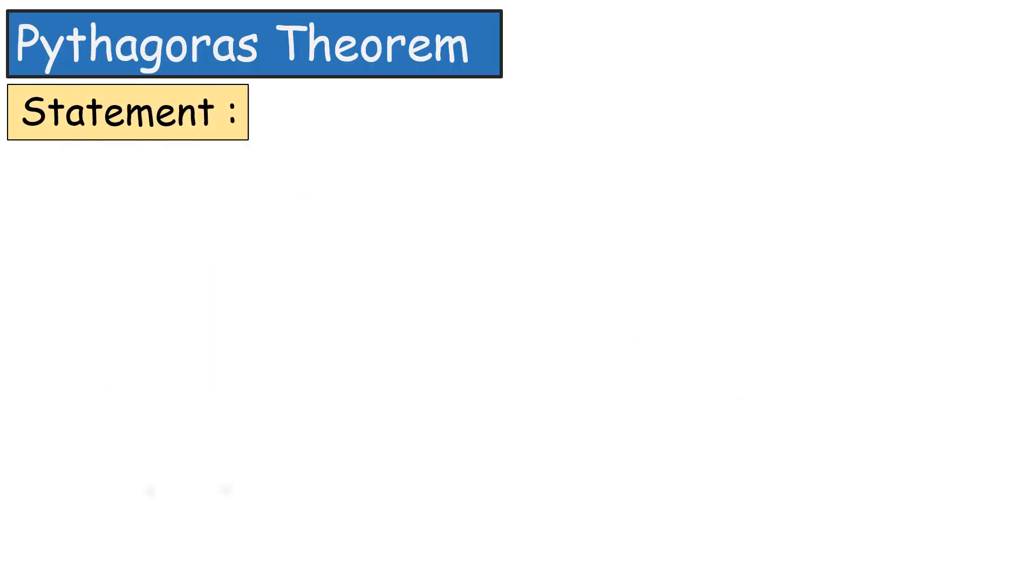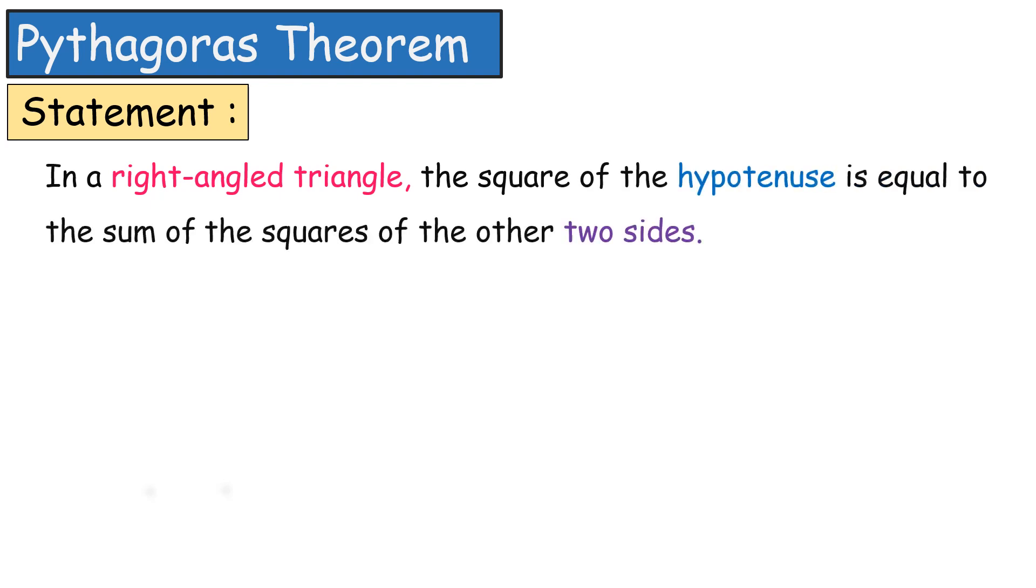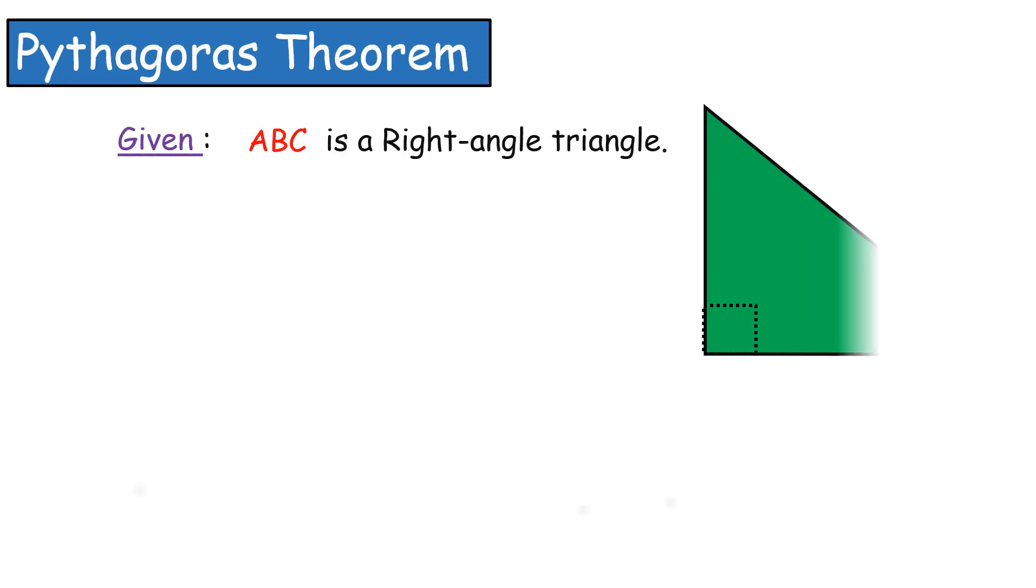First, we are going to write what is given in the statement. Given a right-angled triangle. Name it as A, B, and C. Given that ABC is a right-angled triangle in which angle B makes 90 degrees.